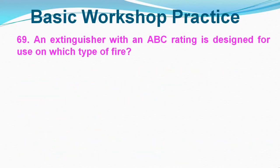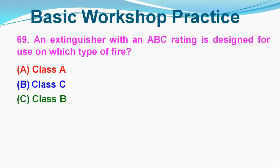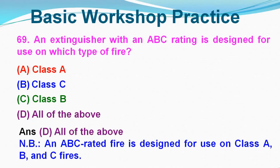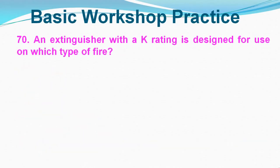Question No. 69: An extinguisher with an ABC rating is designed for use on which type of fire? Option A: Class A, Option B: Class C, Option C: Class B, Option D: All of the above. Correct answer is Option D, All of the above. An ABC-rated extinguisher is designed for use on Class A, Class B, and Class C fires.